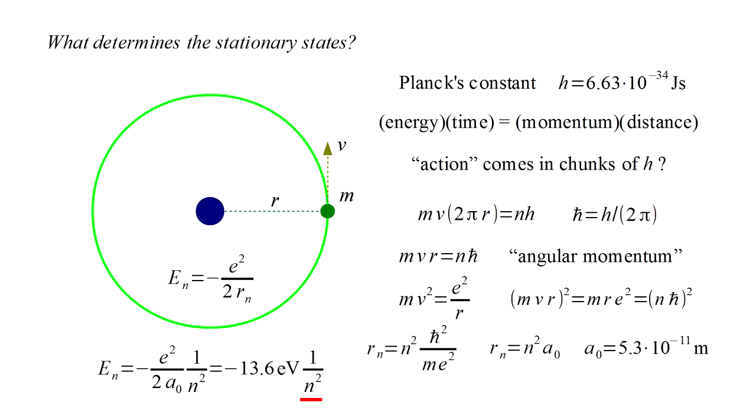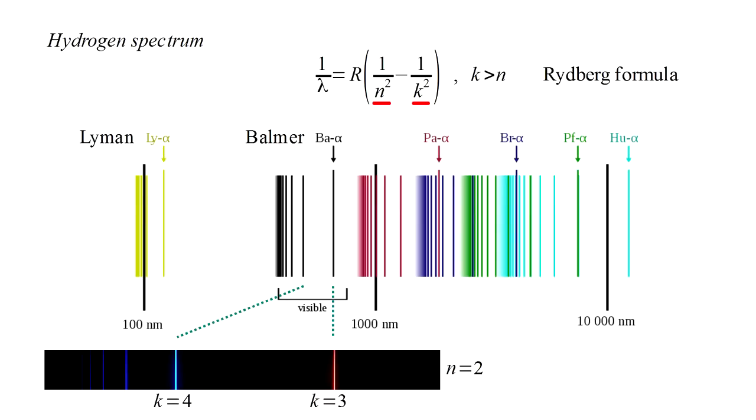An electron volt is a convenient unit of energy. It is equal to what a single electron gains when it passes through a 1 volt battery. The 1 over n² dependence of orbital energy in Bohr's model explains the 1 over n² and 1 over k² terms in the Rydberg formula. This is simply the wavelength corresponding to a transition from the kth orbit to the nth orbit. For instance, the red line in the Balmer series is produced by a transition from the third to the second orbit. Bohr's model had explained the observed hydrogen spectrum, and this was hailed as a great triumph.